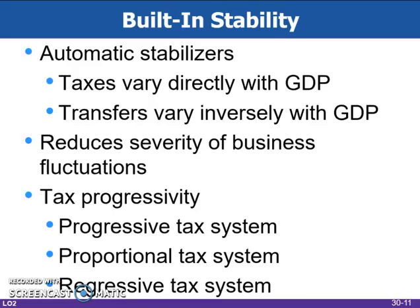Tax revenues vary directly with GDP. Income, sales, excise, and payroll taxes all increase when the economy is expanding, and all of them decrease when the economy is contracting.